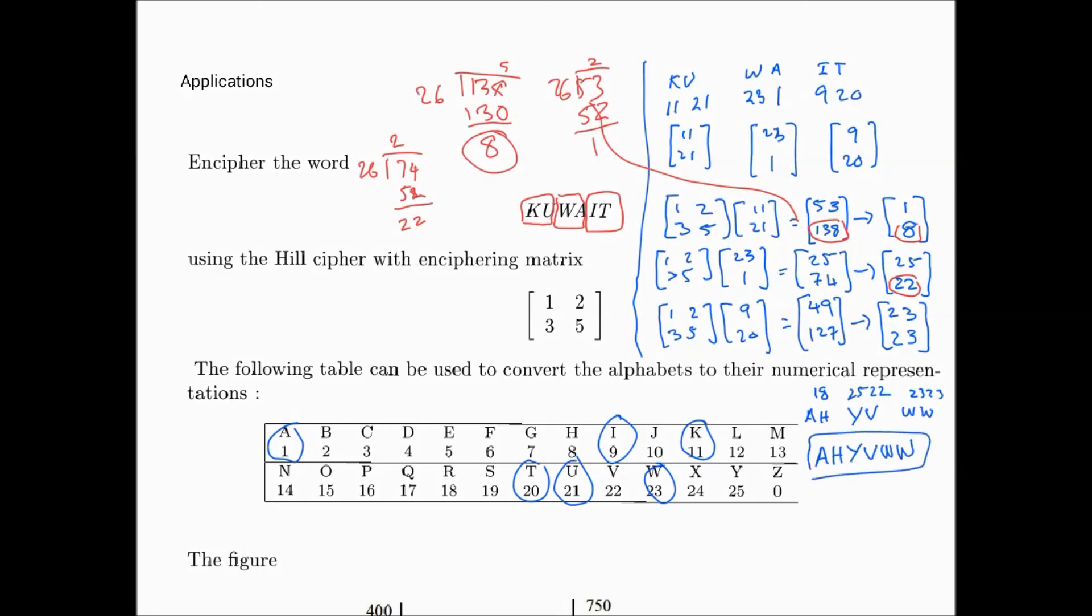That's the enciphered word Kuwait. Hope it's clear. Please practice a few more examples with the same table but a different enciphering matrix. Thank you.